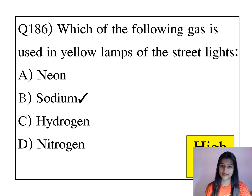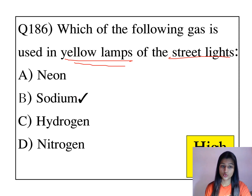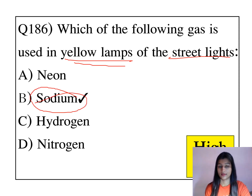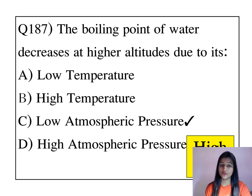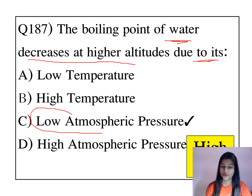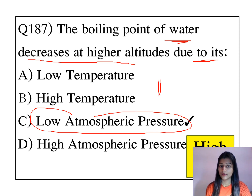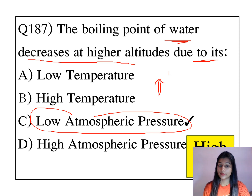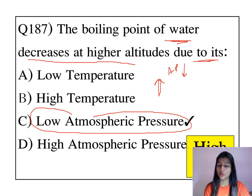Which of the following gas is used in yellow lamps of street lights? Sodium gas is used. The boiling point of water decreases at higher altitudes due to low atmospheric pressure. When altitude increases, atmospheric pressure decreases, and so the boiling point of water also decreases at higher altitudes.